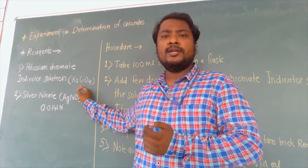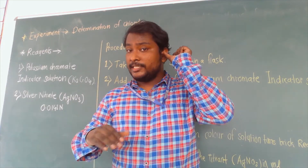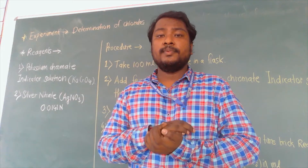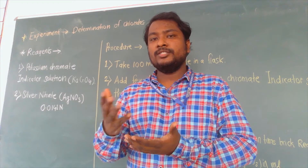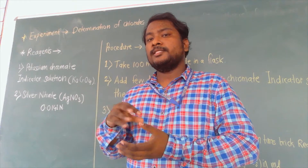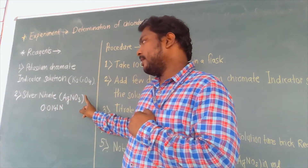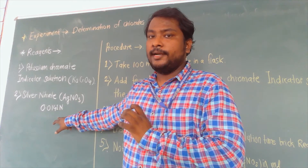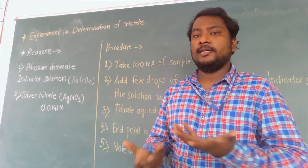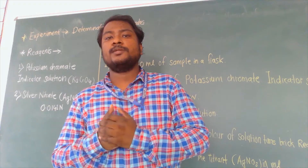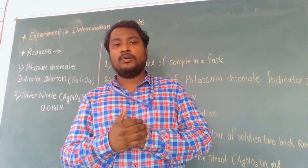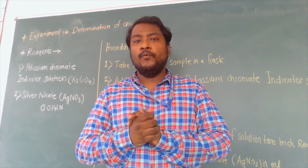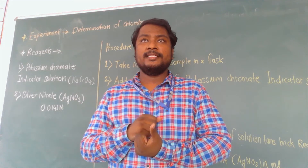The first reagent is potassium chromate indicator solution. The purpose of an indicator is to show a change point when a color change occurs. When chloride content is present in the water, all the chloride ions are detected by the silver nitrate. The end point is observed when a color change occurs in the presence of the indicator. Similarly, in the previous alkalinity experiment, the end point was observed when all the alkalinity present in the sample was detected by the titrant in the burette.